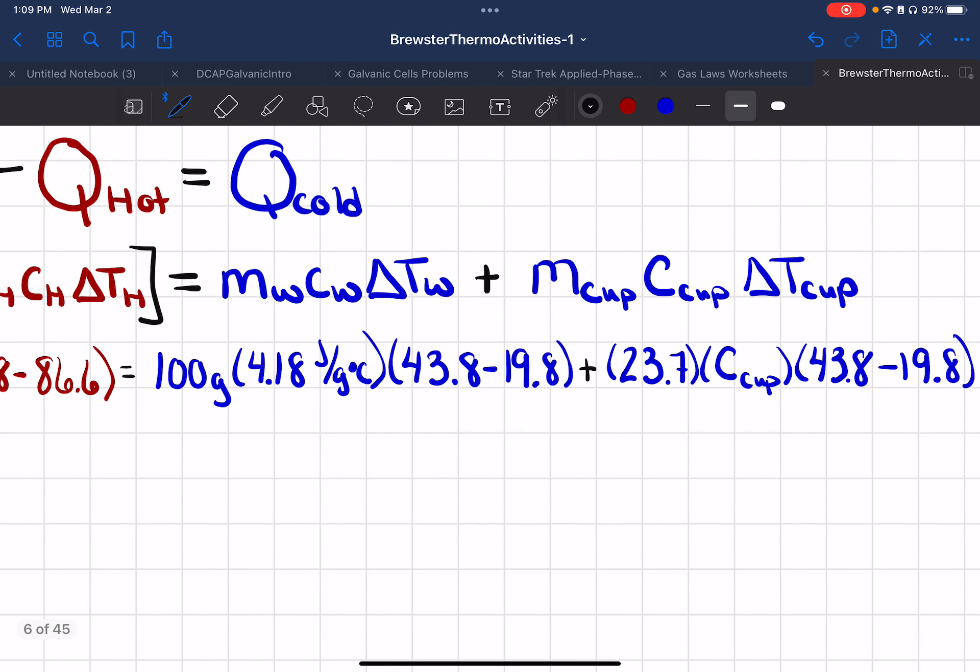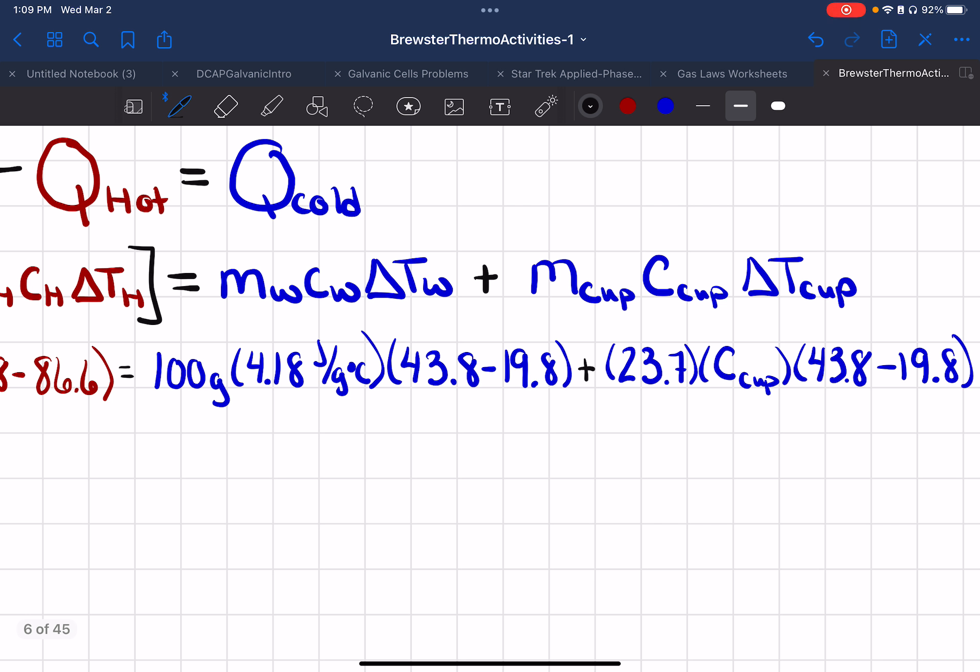And then plus the mass of the cup, the C of the cup, and the delta T cup. And the reason I have the cup in there is because the cup is making the greatest interchange of energy between the water and the hot water, okay? The stirring rod and your temperature probe actually is negligible as far as the heat exchange goes on these calculations.